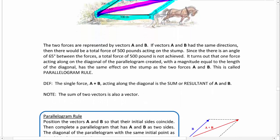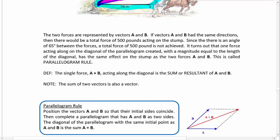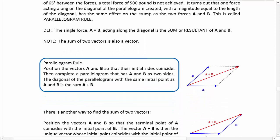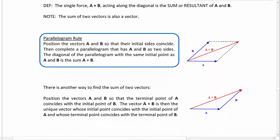This idea of using the diagonal of the parallelogram is called parallelogram rule. The single force A plus B acting along the diagonal is the sum of vectors A and B, but frequently we call this the resultant of A and B, or the resultant vector. Please note that the sum of two vectors is also a vector.